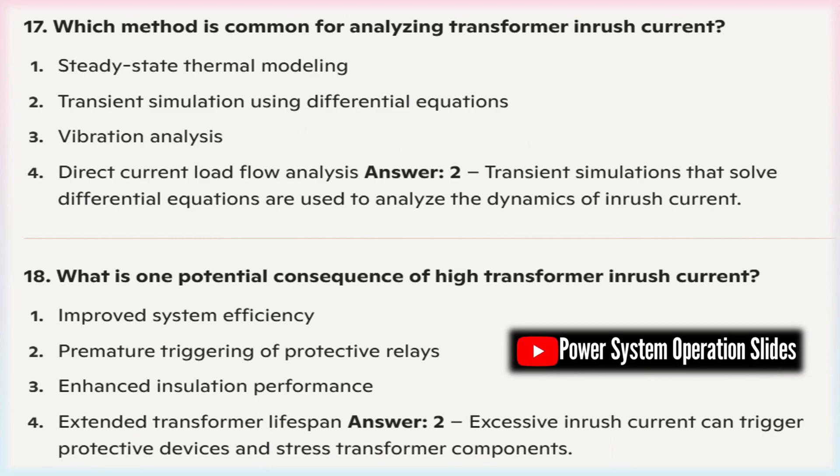Pre-magnetization: Pre-magnetizing the transformer core by applying a small DC current before energizing it with AC can help reduce inrush current. This technique ensures that the core is at a certain magnetic flux level prior to energization, reducing the need for a large surge of current during startup.